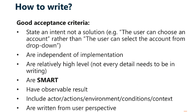Good acceptance criteria should have intent — it should be an intent, not a solution. It should be independent of implementation and at a relatively high level, not overly detailed. It should be SMART: Simple, Measurable, Actionable, and Ready to implement, as well as Time-able, meaning it can be configured in due course of time. It should have an observable result, include actor, actions, environment, condition, and context, and be written from the user's perspective.